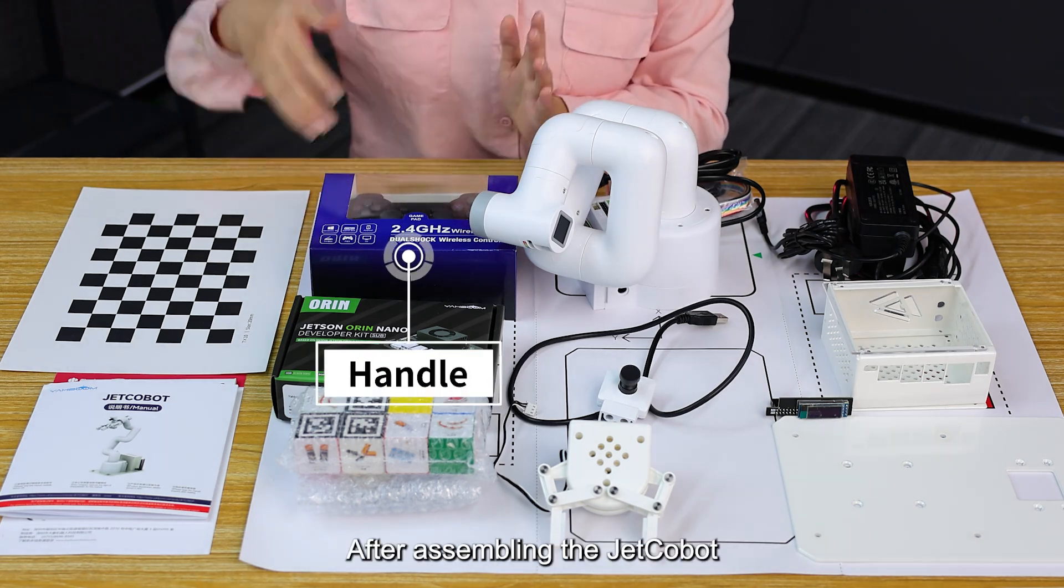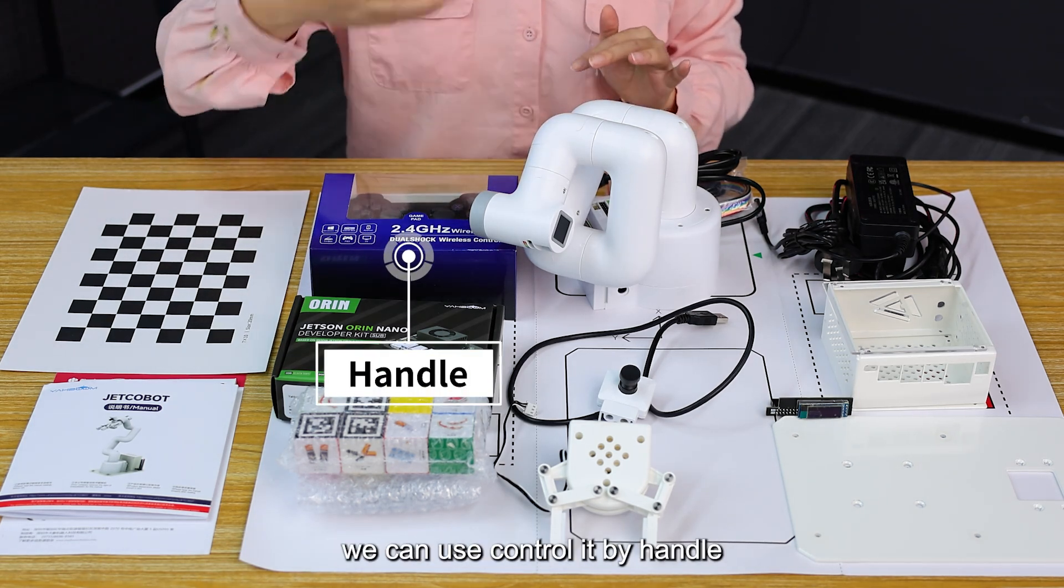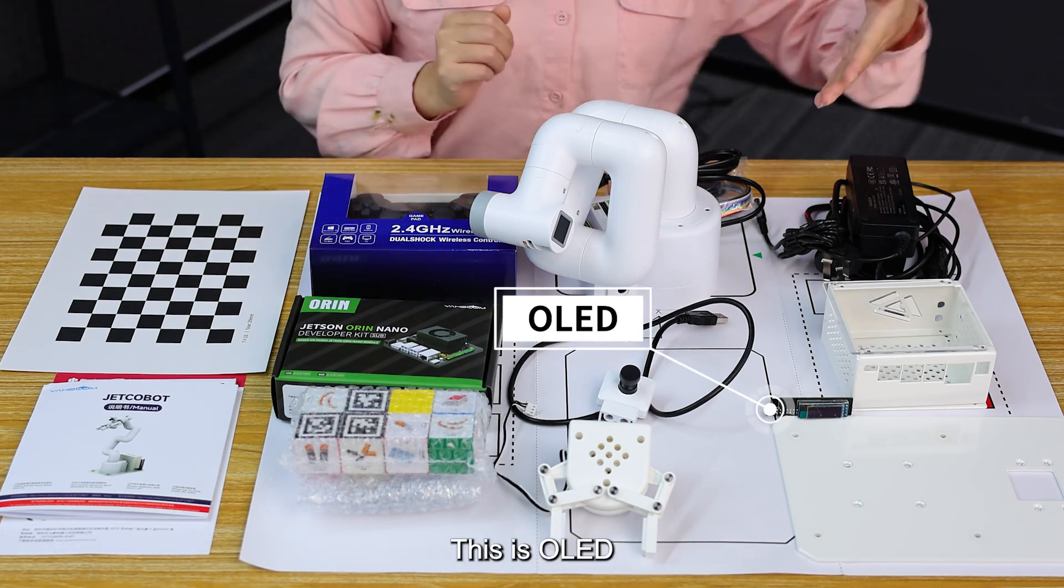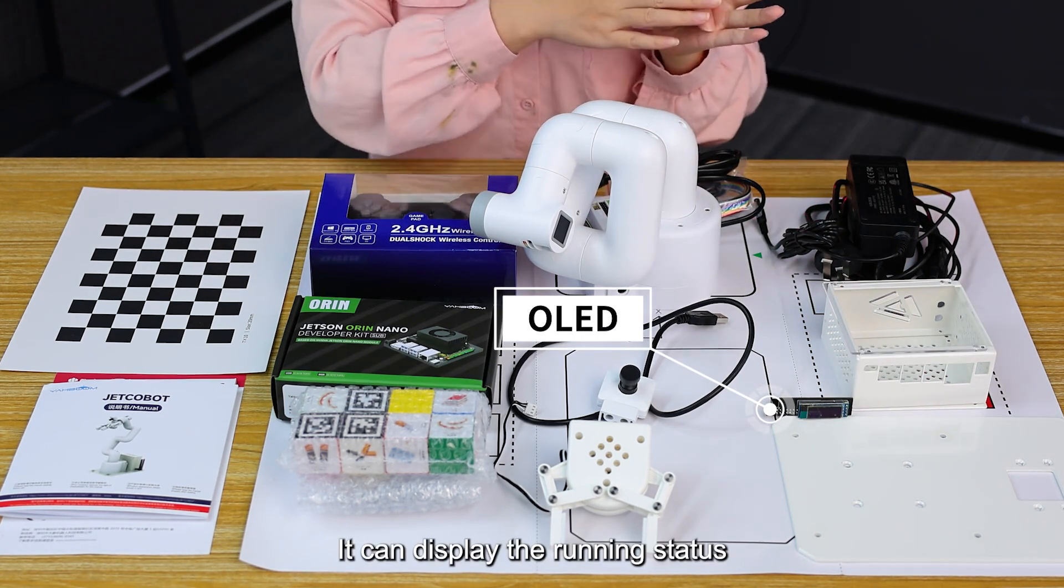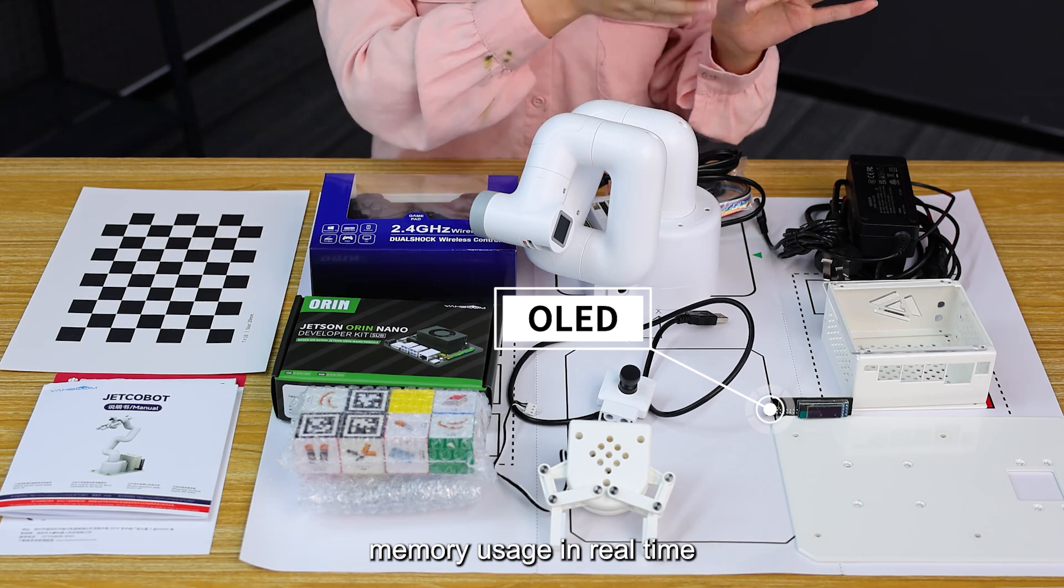This is the handle. After assembling the JetCobot, we can control it by handle. This is the OLED display, which can show the running status, IP address, and memory usage in real-time.